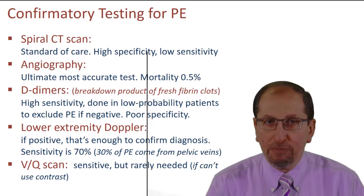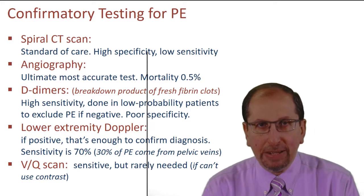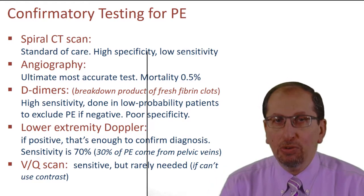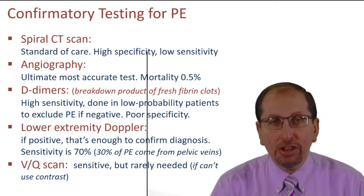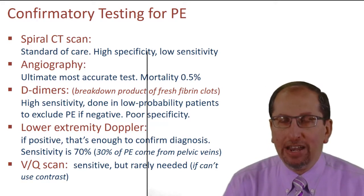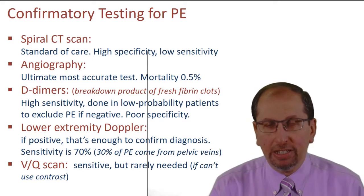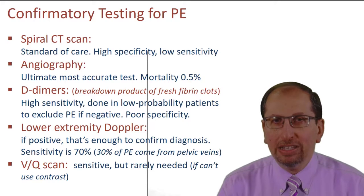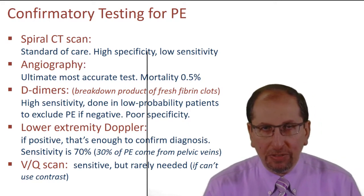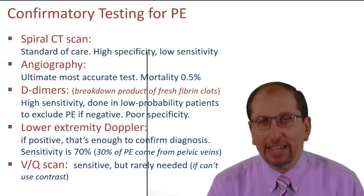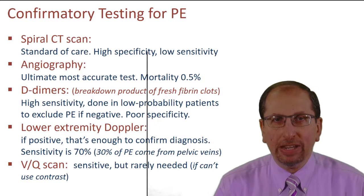Lower extremity Doppler: if positive in a patient with the clinical picture of pulmonary embolism, this is enough to confirm the diagnosis. However, the sensitivity is only 70%, because 30% of pulmonary emboli come from iliac vein thrombosis, which cannot be detected by lower extremity Doppler. VQ scan is a sensitive test but rarely needed nowadays — only if the patient has a contraindication to contrast agents used in spiral CT, and angiography carries 0.5% mortality.